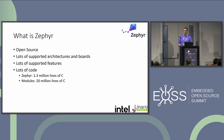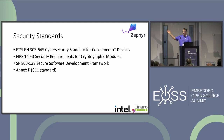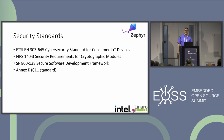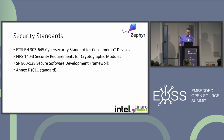Why does security matter so much? There are a lot of answers to that question. People are building products with Zephyr, and vulnerabilities affect them. There are also external requirements — we've listed a couple of security standards here that, depending on what jurisdiction you're trying to sell a product under, have requirements of the process we have to go through to try to ensure that IoT products have some kind of semblance of security.